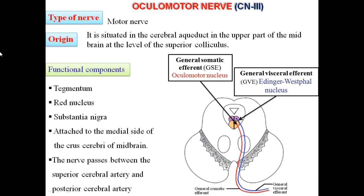Let us now learn about the oculomotor nerve. The two nuclei are situated near the cerebral aqueduct in the upper part of the midbrain at the level of the superior colliculus. These are the oculomotor nucleus and the Edinger-Westphal nucleus. These two nuclei pass through the tegmentum, red nucleus, and substantia nigra, then attach to the medial side of the crus cerebri of the midbrain, then pass between the superior cerebellar artery and posterior cerebral artery. This entire course is regarded as the intracranial course of the oculomotor nerve.